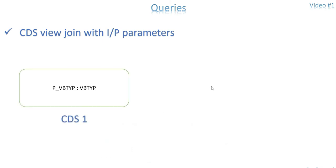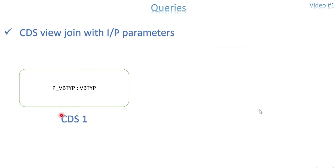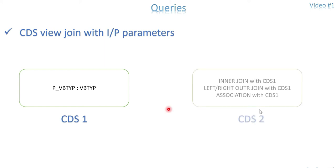So I have a CDS view which has an input parameter, and the question is: how can you access that CDS while doing a join condition? That is the query I received. I plan to cover inner join, left or right outer join, and association — how you can proceed when a CDS has input parameters for these joining options. First we will see the syntax for each join, then we will go to association and discuss pros and cons.